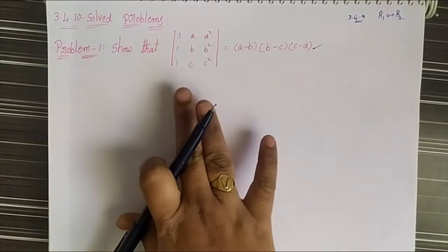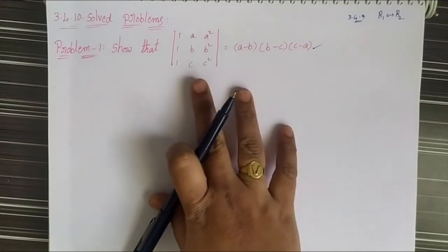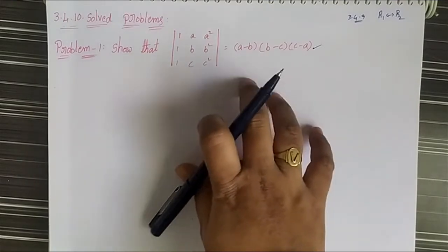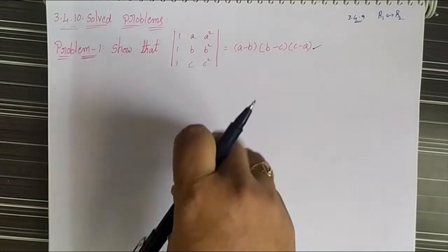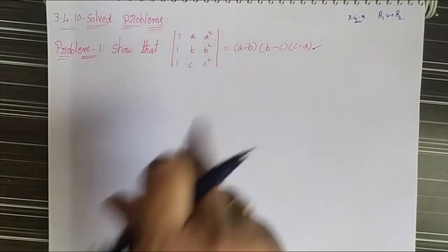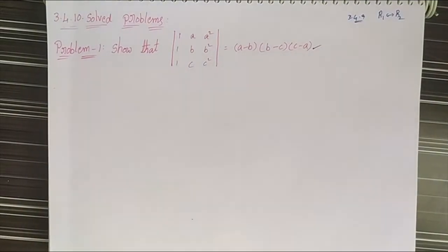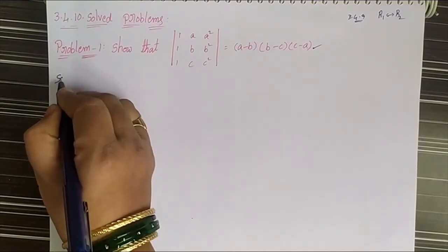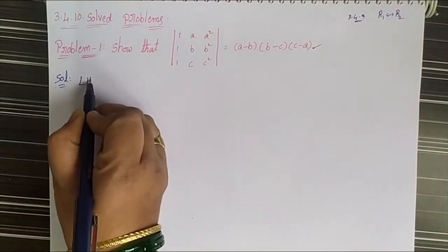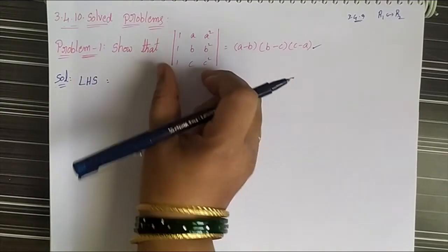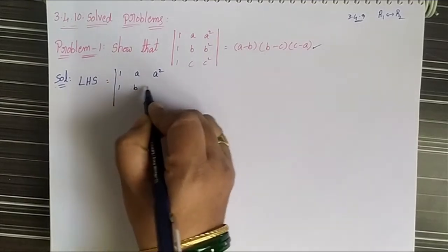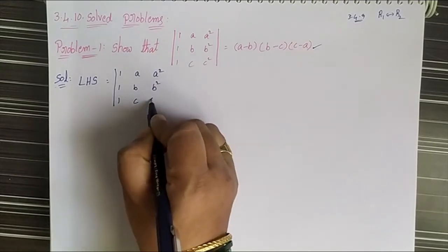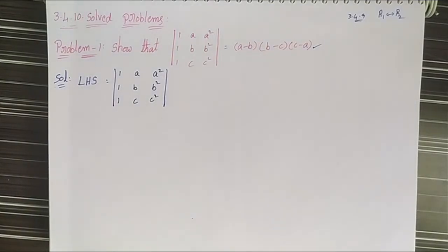We have to show that this equation. For that, first we use the LHS, and after applying some properties, notations, and operations, we get the RHS value. So first, take LHS. LHS means the determinant of (1, a, a²), (1, b, b²), (1, c, c²). This is our left-hand side value.